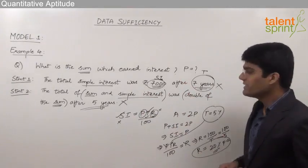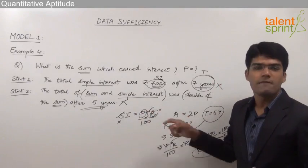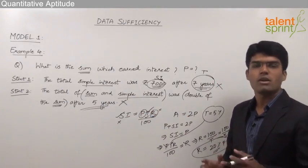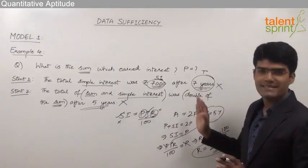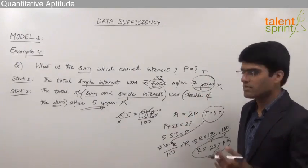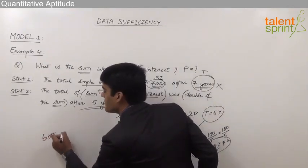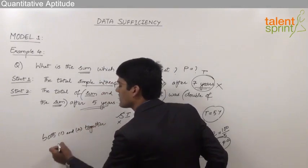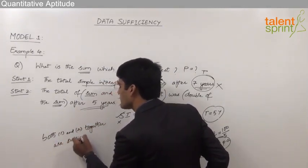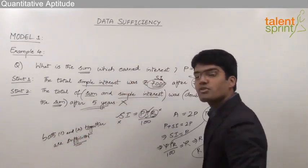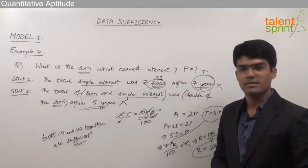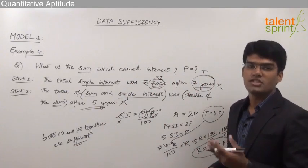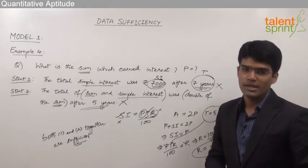By using both statements together — SI = 7000, T = 7 years, and R = 20% per annum — the principal can be obtained. Remember, there is no need to substitute the values and actually solve; this is only about checking the sufficiency of the data. The answer here is that both statements together are sufficient, which is option number 5. This is how we combine statements when individually they fail to answer the question.